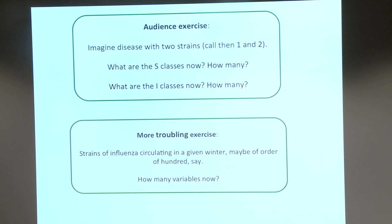But here's the much more troubling exercise. If I want to model flu evolution — to say which strain will become dominant at the end of the year — I might need to model about 100 strains. How many S categories do I need then? It's two to the power of 100, which is about ten to the power of 30 — really bad. It's probably more than the number of particles of sand on Earth. And I classes go like N times 2 to the N minus one, which is even worse.